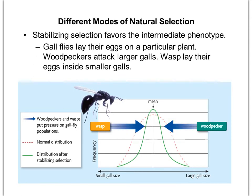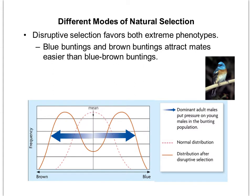Stabilizing selection is whenever both extremes decrease in numbers and the intermediate phenotype increases. Our example is gall flies: woodpeckers attack the larger gall flies, so we see fewer large ones; wasps lay eggs in the smaller galls, so the smaller ones also decrease. The number that is not decreasing is the average-size gall fly, which is why we end up with a very narrow bell curve.